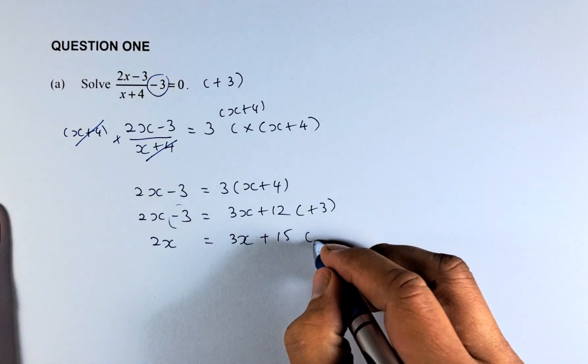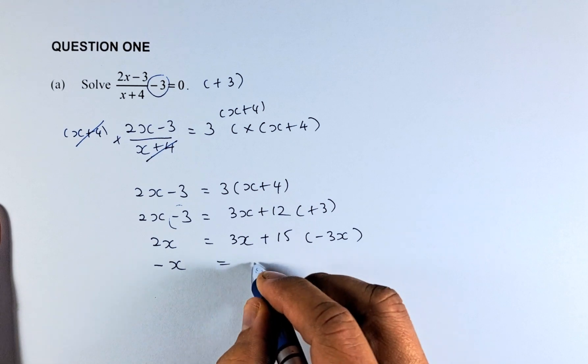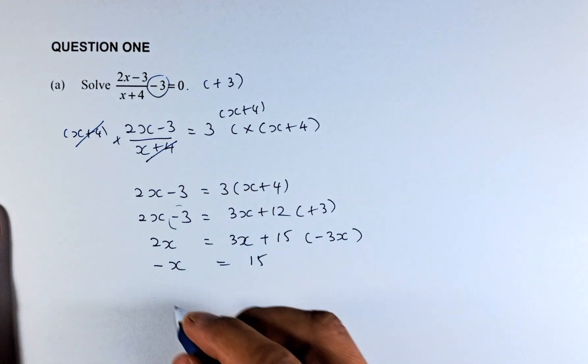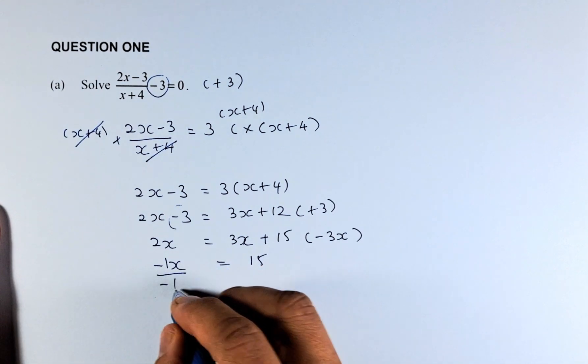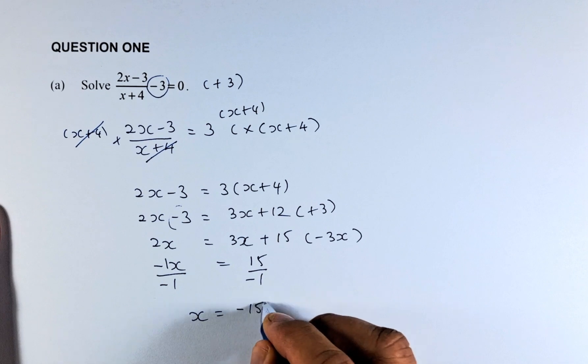Last but not least, we're going to minus 3x on both sides. So it's going to be -x = 15, because 3x - 3x is going to be 0. And to get rid of the minus 1, we're going to divide by minus 1 on both sides. So x = -15.